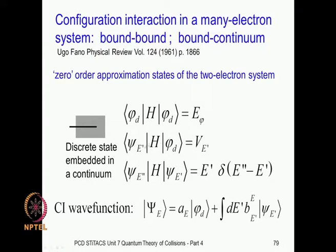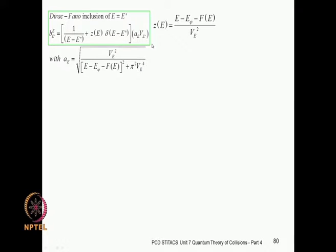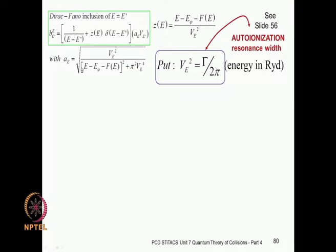We set up the configuration interaction which has both components — the discrete as well as the continuum — because of the CI. This is a result of the correlation which is ignored in the independent particle approximation. We used the direct Fano trick of using delta function integration whenever the coefficient b would appear in the integrand. Using that, we agreed that the function z would correspond to appropriate boundary conditions, which gave us the coefficient A(E). I had pointed out that V(E) has the dimensions of root of energy, so V(E) squared corresponds to the energy width of the resonance.